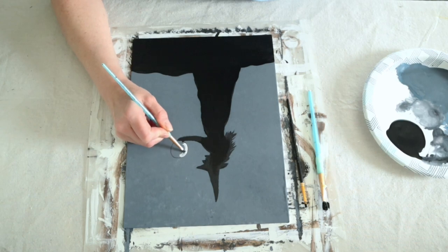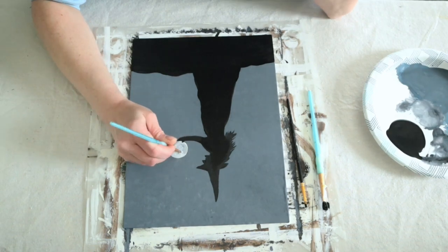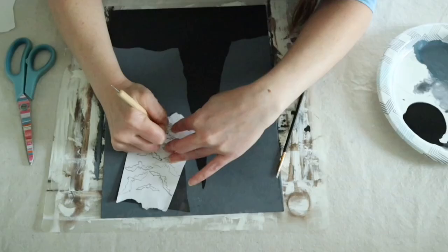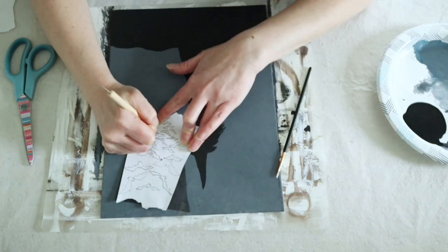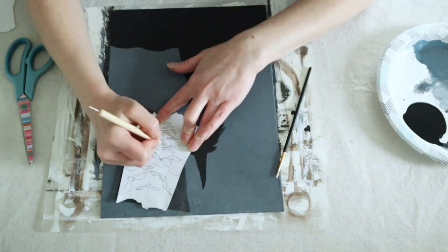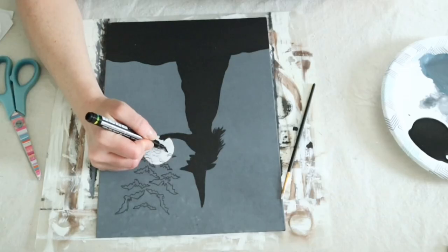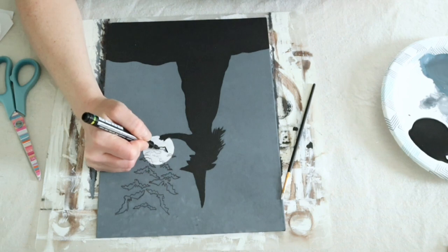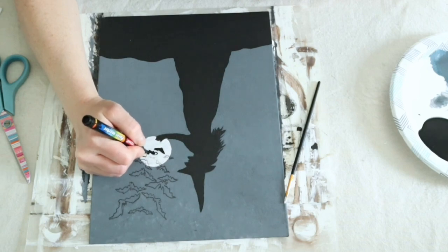After I finished her silhouette, I went into the moon just using some of that white acrylic paint. Again, I just used my tiny brush and did the outline first and then filled it in. I also wanted to add some bats to this painting, so I traced some little bats off of my computer again and I used a little piece of my carbon paper to trace those out onto my canvas. For this part, I actually did use my paint marker to fill them in.